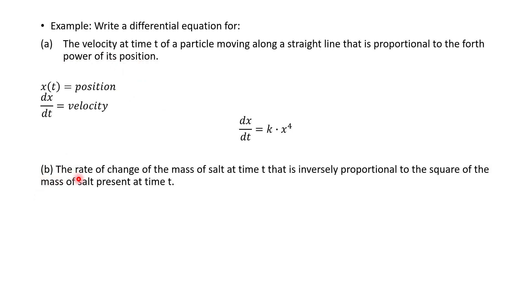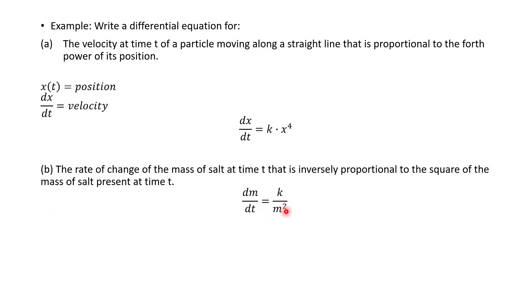One more: the rate of change of the mass of salt at time t is inversely proportional to the square of the mass of salt present at time t. The rate of change is our first derivative. Using m for mass and t for time, because it's inversely proportional, we divide by what it's inversely proportional to — the square of the mass — giving dm/dt equals k divided by m squared. That's our background for differential equations.